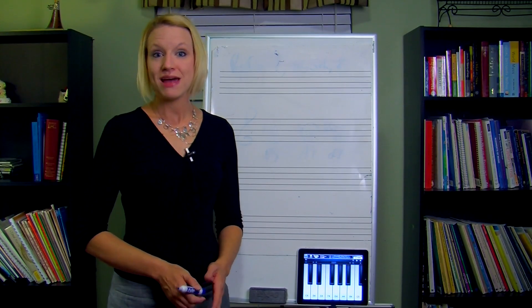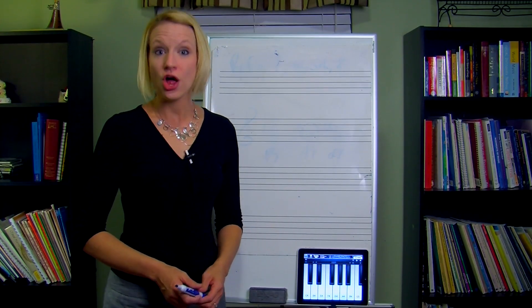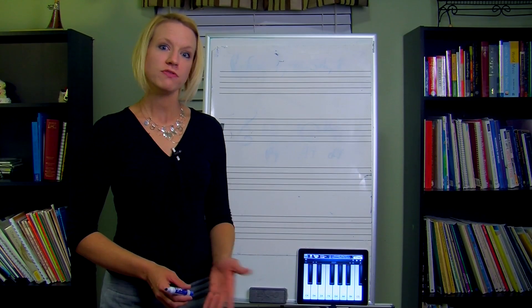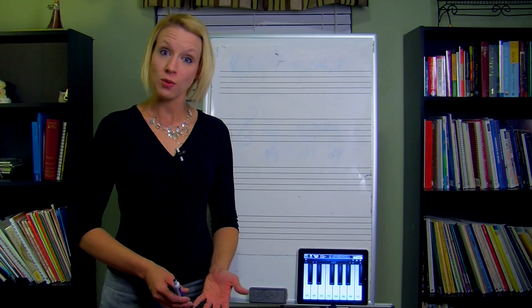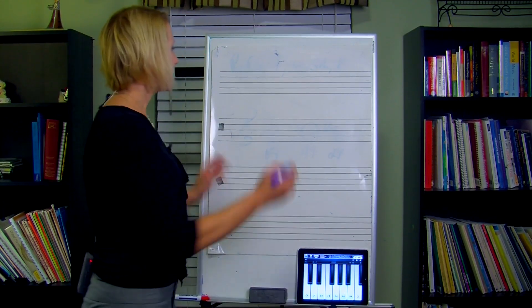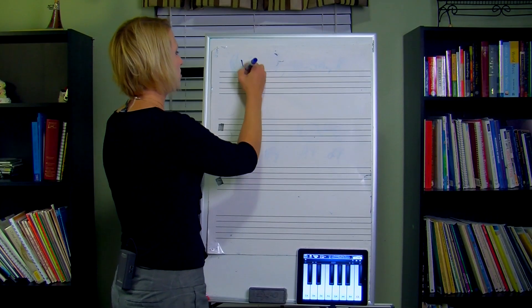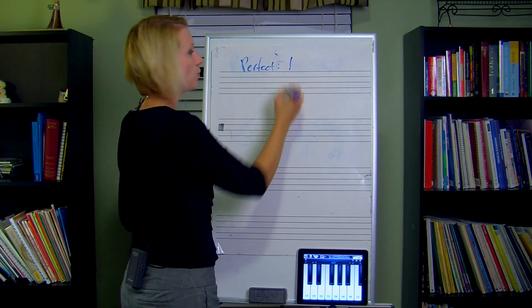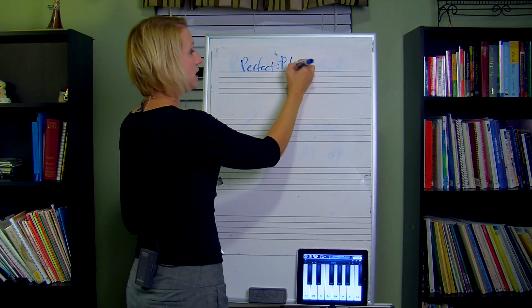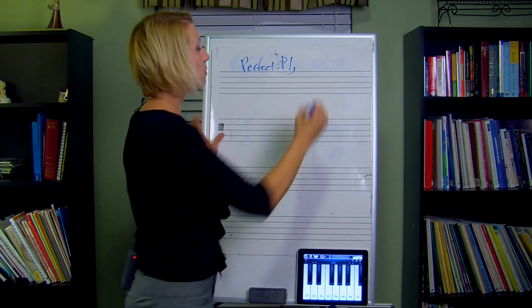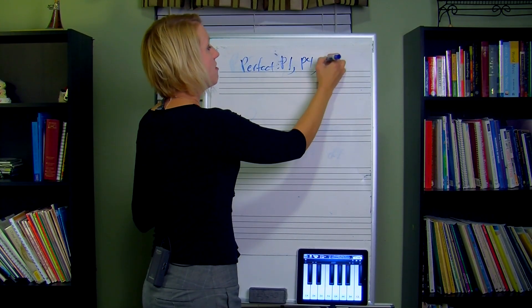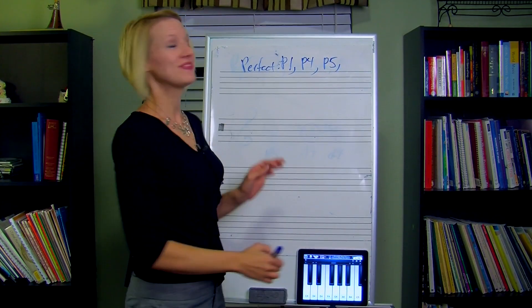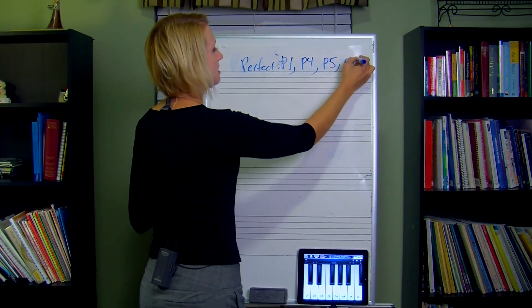The first thing we're going to talk about is how we alter the perfect interval. Let's review what the perfect intervals are within the major scale. In the last chapter, the perfect intervals were unisons (P1), perfect fourth, perfect fifth, and perfect octave.